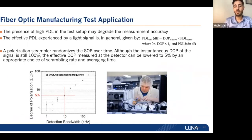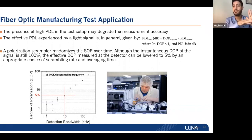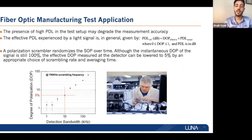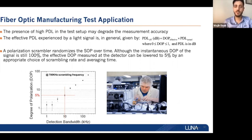For component testing, the presence of PDL in your test setup degrades measurement accuracy. Customers use a high-speed polarization scrambler to scramble the polarization and mitigate the effective PDL in the system. For example, if you scramble at 700 kHz and use a detection bandwidth of 10 kHz or less, you will achieve a degree of polarization of five percent or less, which significantly lowers the effective PDL in your system.